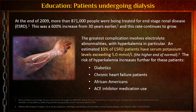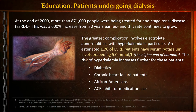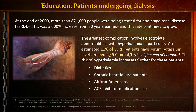Let's talk about the dialysis patient briefly. In 2009, more than 871,000 people in the United States had end-stage renal disease — that's a 600% increase over the last 30 years. If we look at the next 10 years, we're going to see a lot more renal patients. The greatest complication we need to think about is electrolyte imbalance, with the number one being hyperkalemia — high potassium.